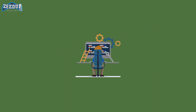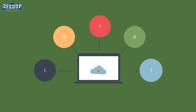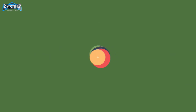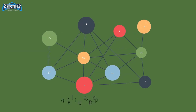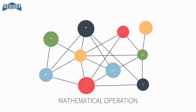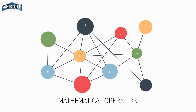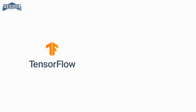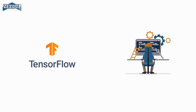How TensorFlow Works: TensorFlow allows developers to create dataflow graph structures that describe how data moves through a graph, or a series of processing nodes. Each node in the graph represents a mathematical operation, and each connection or edge between nodes is a multidimensional data array, or tensor. TensorFlow provides all of this for the programmer by way of the Python language.